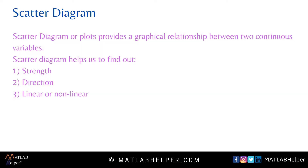For selecting features, first we look at the data type of features, and depending on the data type, we apply standard rules or methods to extract optimal features. If features are numerical, we use scatter diagrams or correlation coefficients to determine the relationship between features. If features are categorical, the most commonly used methods are principal component analysis, decision tree algorithm, and random forest algorithm.